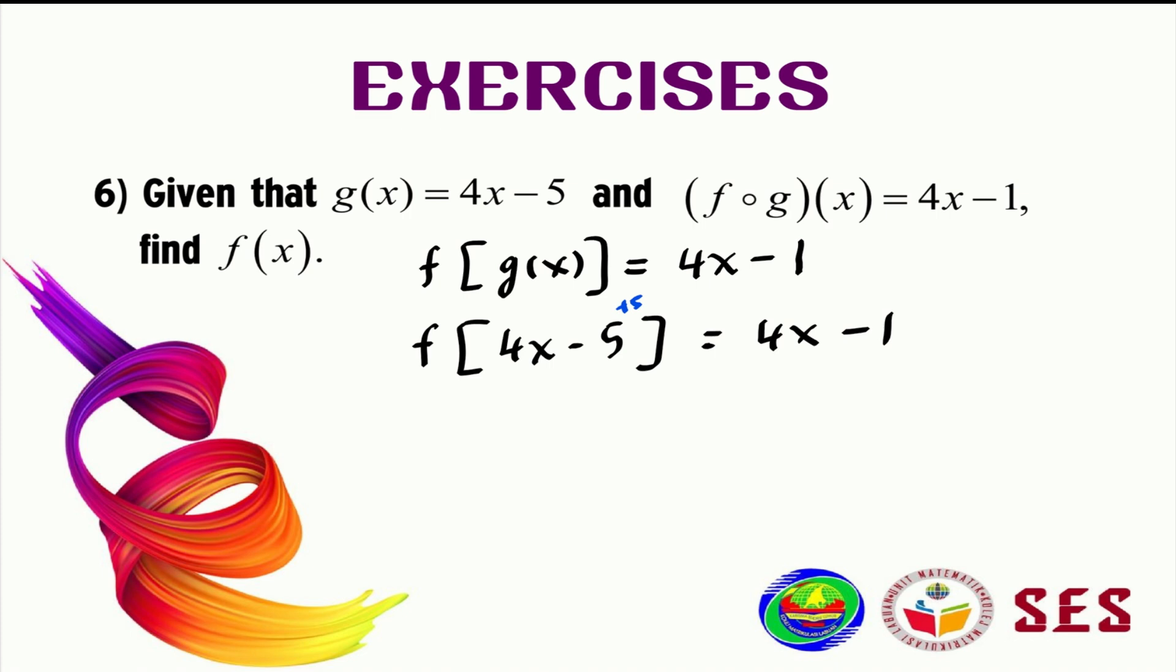We will do f composed with 4x, assuming the negative 5 is gone now. So we'll have 4, and now we have this one as x plus 5 on the right side here, and this minus 1 will remain as it is.